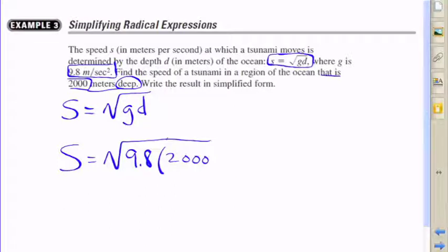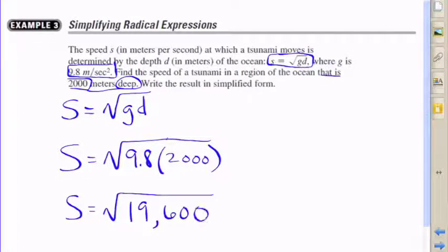So essentially all we need to do to understand the speed at which the tsunami moves is evaluate the square root of 9.8 times 2,000. So we'll work underneath the radical first and just do 9.8 times 2,000,